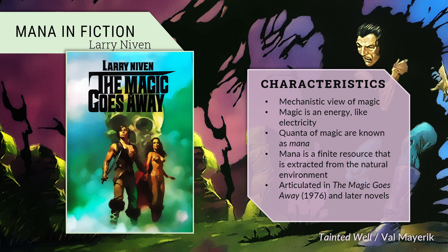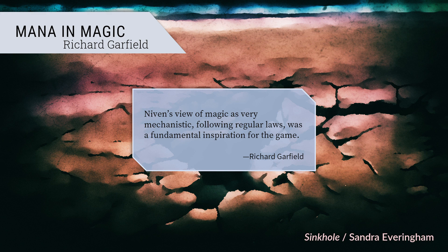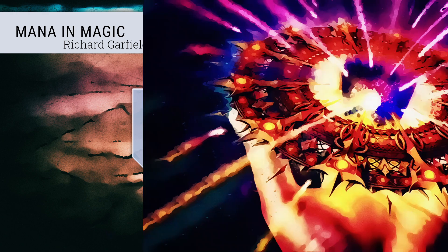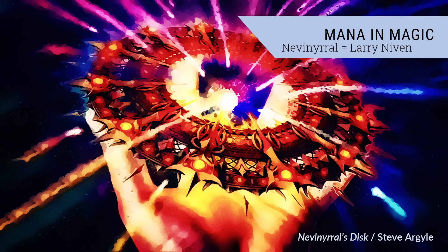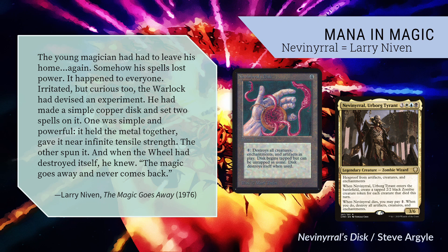Garfield loved Niven's work, and for the designer of Magic, Niven's quantum theory of magic was a touchstone. Garfield said, quote, 'Niven's view of magic as very mechanistic, following regular laws, was a fundamental inspiration for the game.' Garfield paid homage to Niven by designing a card called Nevinyrral's Disc in the very first set, Alpha — an immensely destructive artifact that wipes out creatures, enchantments, and artifacts. Nevinyrral is Larry Niven spelled backwards, and the disc references the Warlock's Wheel in one of Niven's stories, which depletes mana in the surrounding landscape, rendering it barren, demonstrating that mana is a finite resource.